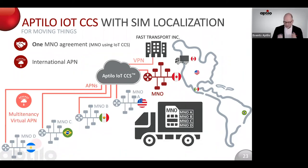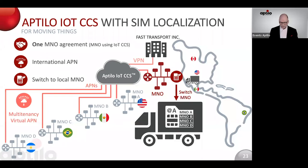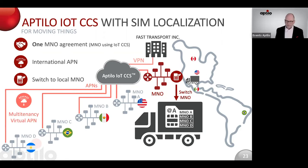As the truck now moves from Canada, in this case, down to the U.S., the mobile operator can do a switch to the local mobile operator with an over-the-air activation like this. Note this has nothing to do really with IoT CCS — they can do that anyway, and it's another tool that does that. But the combination between SIM localization like this and the Aptilo IoT CCS is enormous.